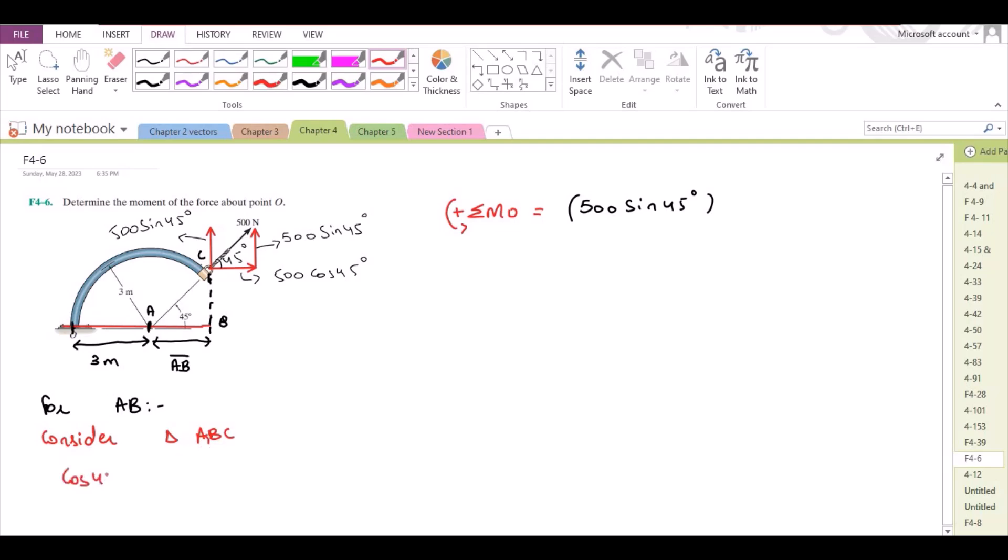Cos 45 degrees equals the adjacent, that is AB, over the hypotenuse. The hypotenuse is equal to the radius of the circular path, so it's also 3 meters. From here AB becomes 3cos45.